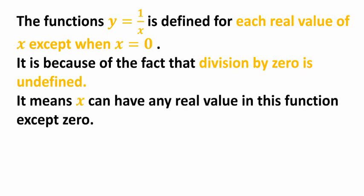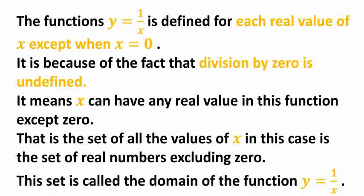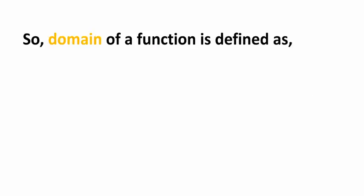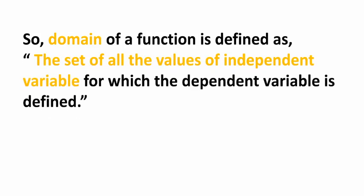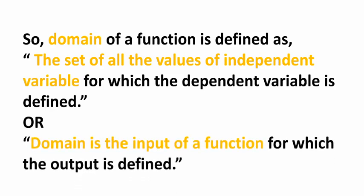It is because division by 0 is undefined. It means x can have any real value in this function except 0. That is, the set of all the values of x in this case is the set of real numbers excluding 0. This set is called the domain of the function y = 1/x. So domain of a function is defined as the set of all the values of the independent variable for which the dependent variable is defined, or domain is the input of a function for which the output is defined.